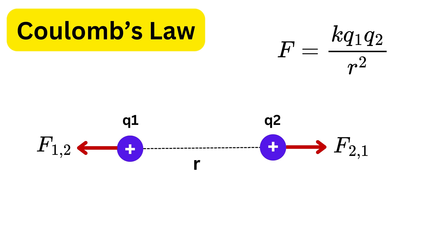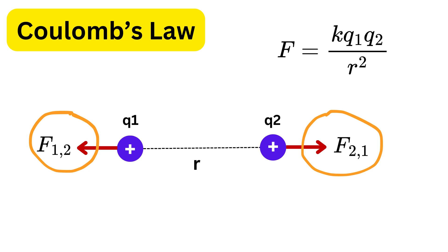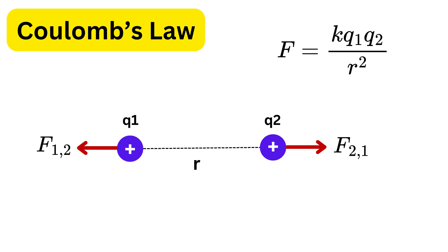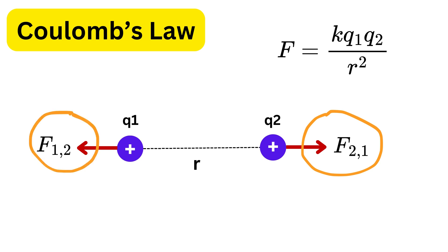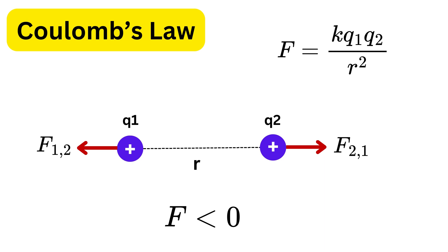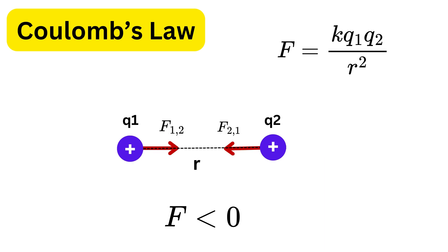The best way to determine the directions of these forces is to assume them to be repulsive: F(2,1) will point away from q1 and F(1,2) will point away from q2. Then substitute the values of charges with their signs in the formula. If the final answer is positive, the assumed repulsive directions are correct. If negative, the actual direction is opposite and the force is attractive.